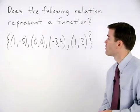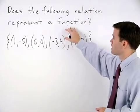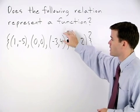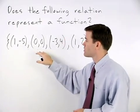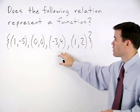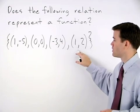Here we're asked if the following relation represents a function: (1, -5), (0, 0), (-3, 4), and (1, 2).